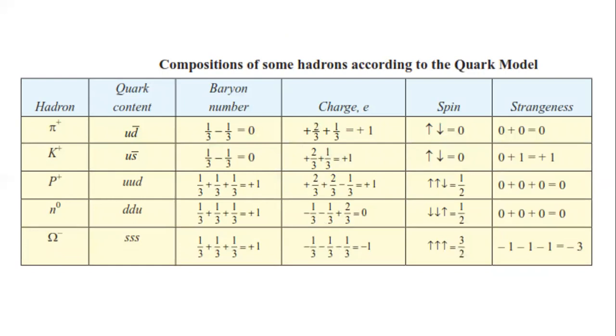These are different compositions. There are many hadrons in composition: pi plus, K plus, P plus, neutron. You'll get many compositions that will obey the baryon charge, spin, and strangeness.